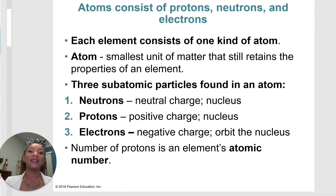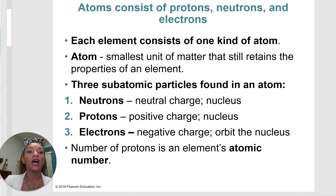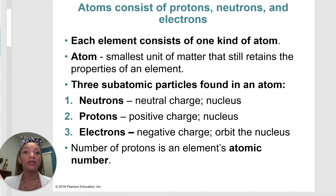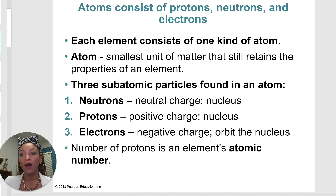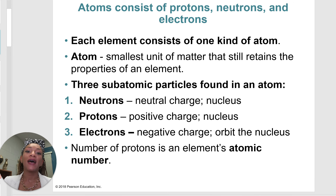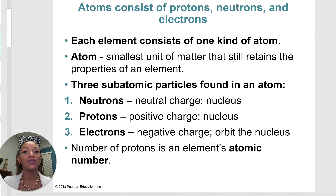Let's talk about atoms — they are so exciting. Atoms consist of protons, neutrons, and electrons. Each element consists of one kind of atom. An atom is defined as the smallest unit of matter that still retains the properties of an element. There are three subatomic particles. Neutrons have a neutral charge — zero charge, not positive or negative — and neutrons are found inside the nucleus. Neutrons are neutral and found in the nucleus — that's the easiest one to memorize.